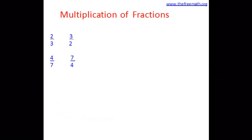Let's look at these two pairs. The first pair is 2 over 3 and 3 over 2. The second is 4 over 7 and 7 over 4. We observe that the numerator of the first fraction is the denominator of the second, and the denominator of the first fraction is the numerator of the second. That means we have interchanged the numerator and denominator to come up with the second fraction.